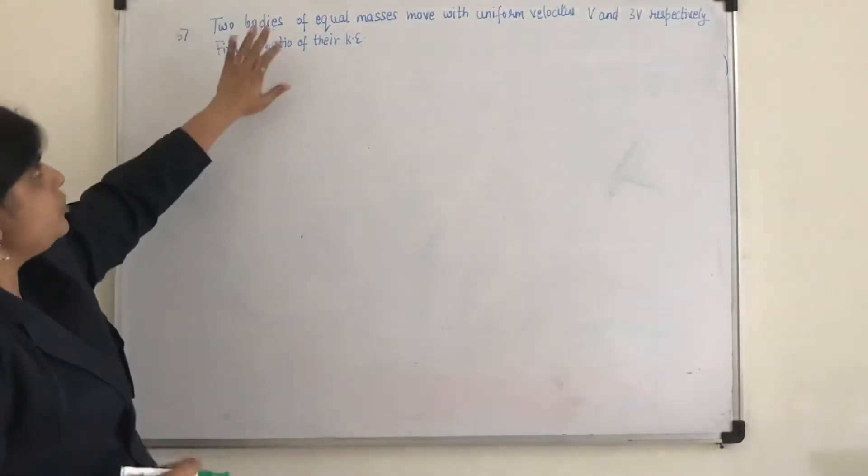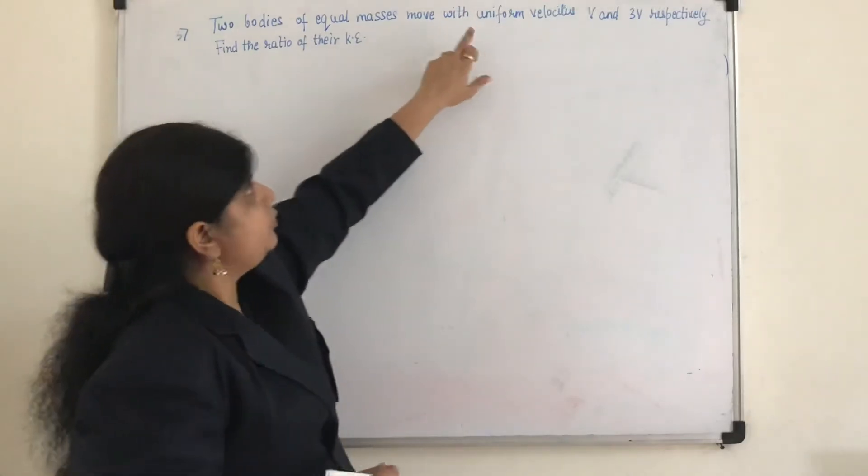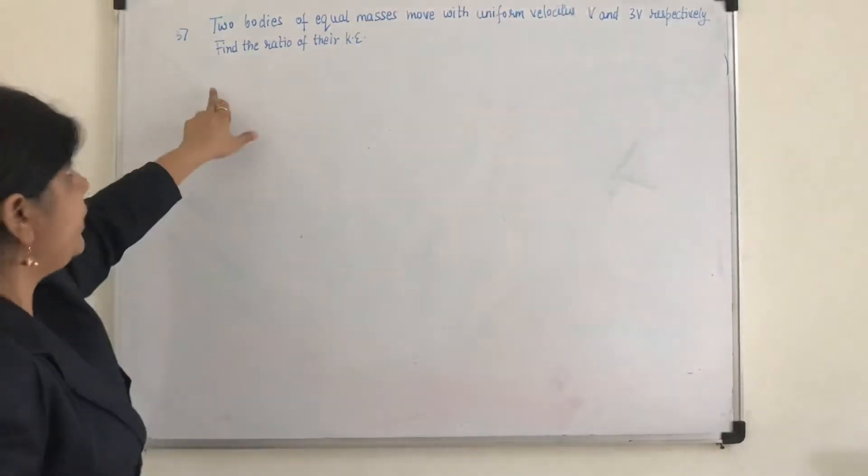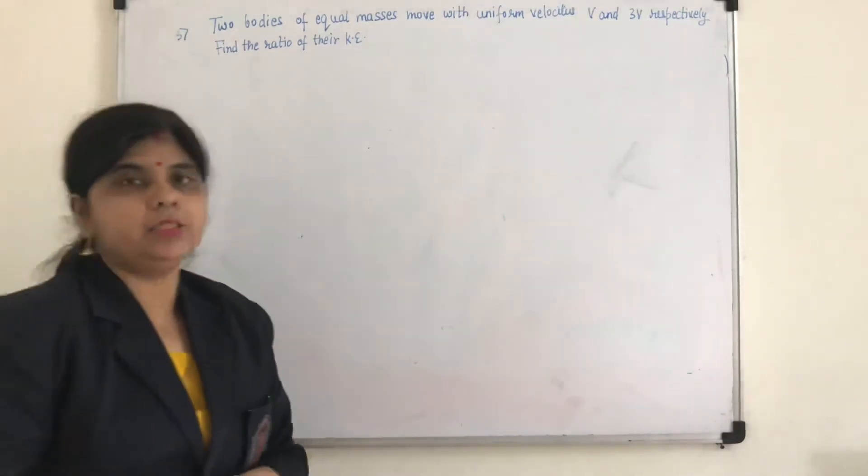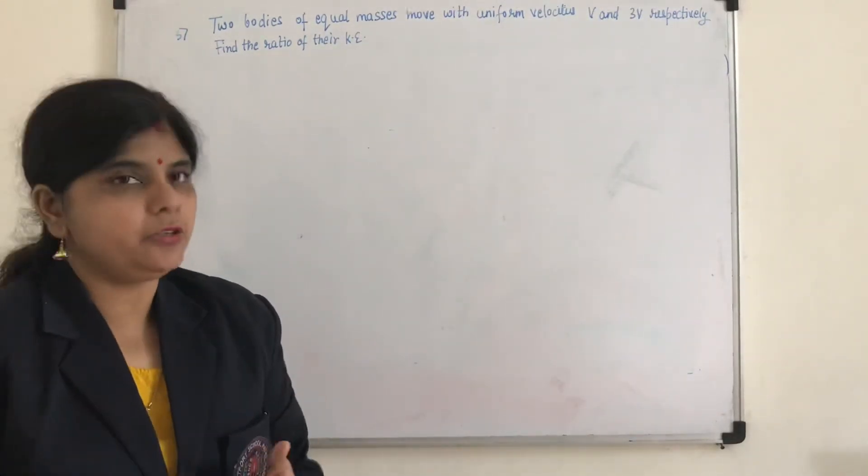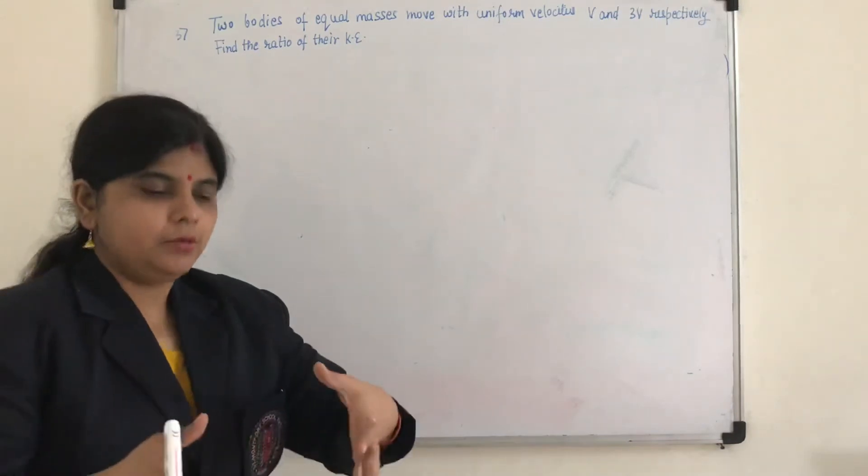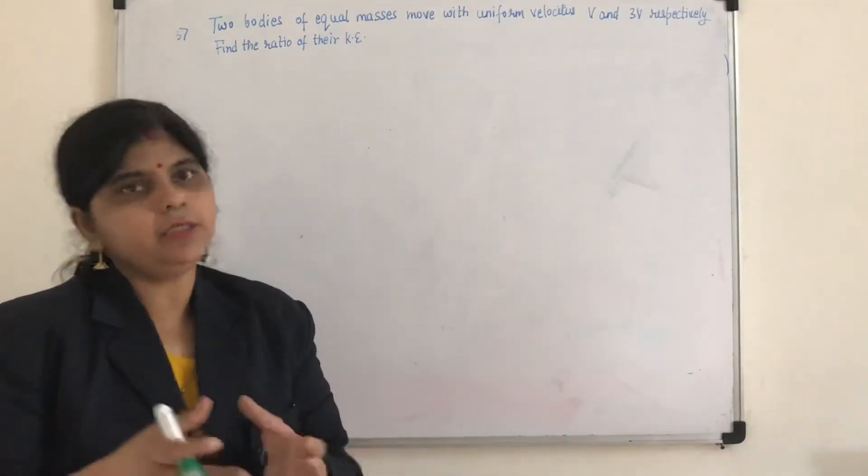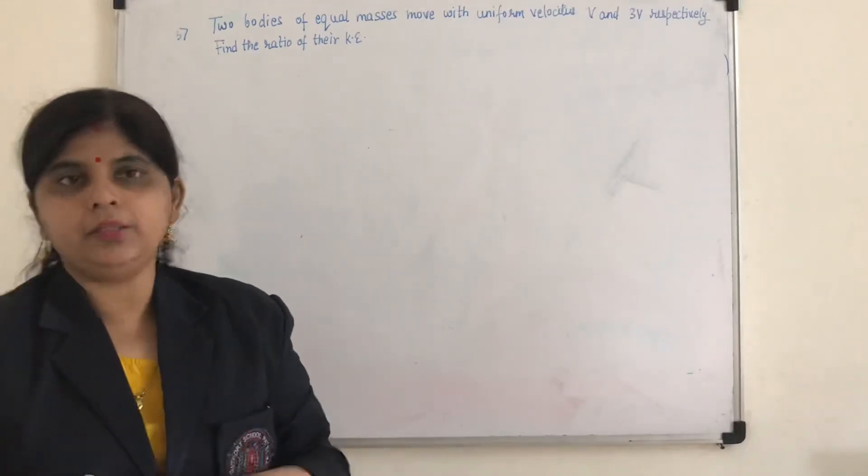Let us do the third one. What is given? Two bodies of equal masses move with uniform velocities v and 3v respectively. We find the ratios of their kinetic energy. So when we need to find the ratios, what I will do is we can calculate individually the kinetic energy of the first body and the second body, and then we can find the ratio.